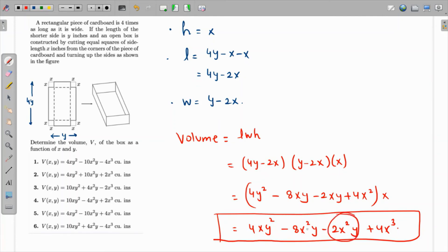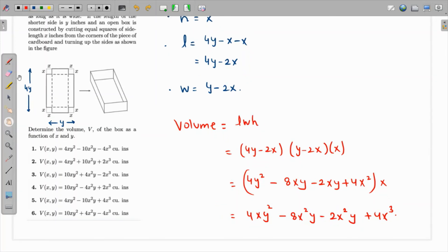So in fact, this can be further simplified to write it as - it will become 4xy² minus 10x²y plus 4x³. And now if we compare, I think this would be the correct choice because it is matching with this one.